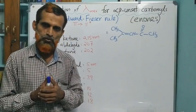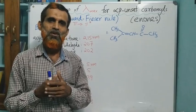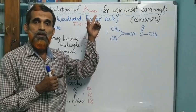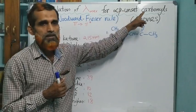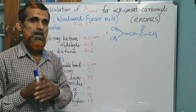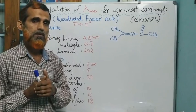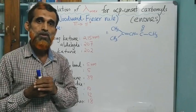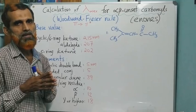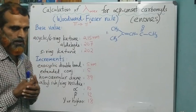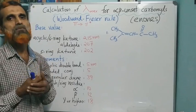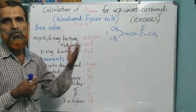Welcome dear students to today's online class on UV-visible spectroscopy. Today we discuss how to calculate lambda max of alpha-beta unsaturated carbonyl compounds, which we can simply call enones. In the previous class we discussed calculation of lambda max for conjugated dienes based on Woodward-Fisher rules. The same empirical rules can be used for calculating lambda max of enones, and we have some set of standard values based on which we can calculate lambda max of various molecules.